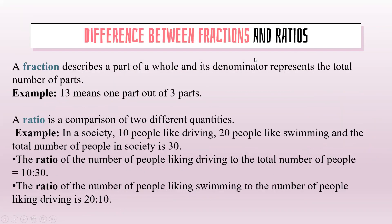Difference between fractions and ratios. A fraction describes a part of a whole and its denominator represents the total number of parts — for example, 1/3 means one part out of three parts. A ratio is a comparison of two different quantities. For example, in a society, 10 people like driving, 20 people like swimming, and the total number of people in the society is 30. The ratio of the number of people liking driving to the total number of people is 10 is to 30, whereas the ratio of the number of people liking swimming to those liking driving is 20 is to 10.